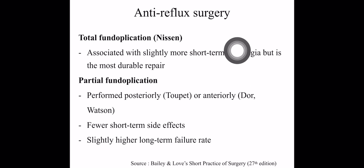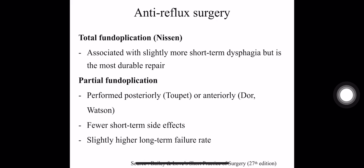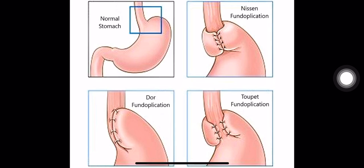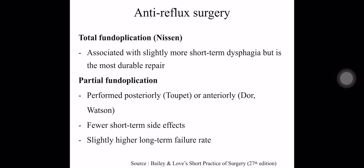Anti-reflux surgery includes fundoplication, which has two types: total and partial. Total fundoplication is Nissen fundoplication, and there is also Toupet posterior fundoplication and Dor anterior fundoplication. Total fundoplication is associated with a lower failure rate, but has short-term complications like dysphagia. Partial fundoplication has fewer short-term side effects but a higher failure rate in the future.